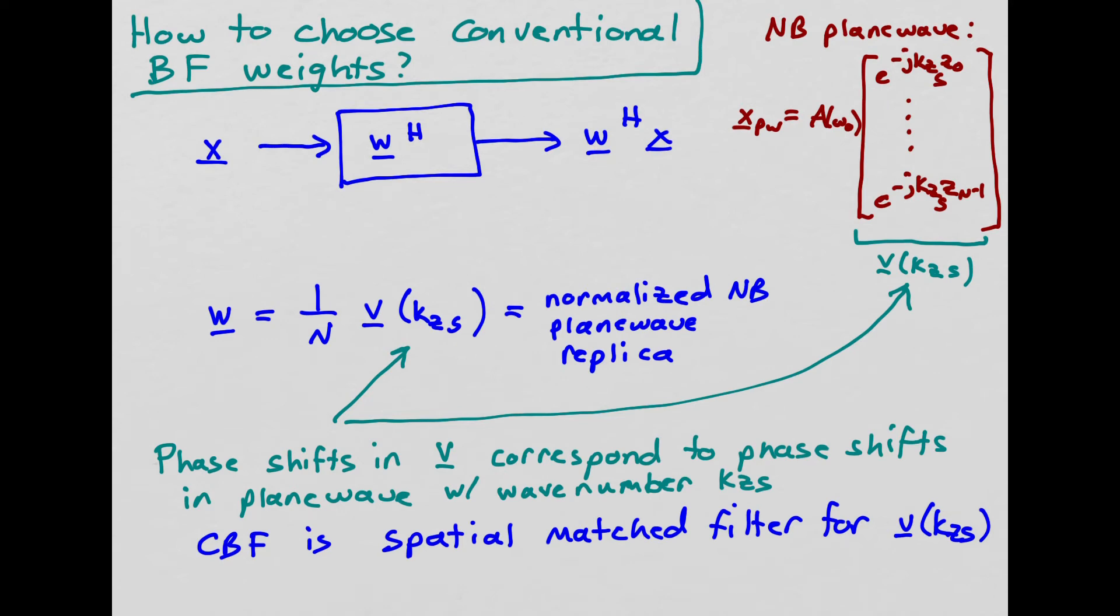And hopefully, it'll cause other plane waves coming from different directions, it won't have the right set of phase shifts, and so they won't add constructively. We can think of the conventional beamformer as a spatial matched filter. We have this template signal, which is the plane wave replica signal, V of KZs, and that's the template we're looking for. And so the conventional beamformer is basically the spatial matched filter looking for that template. We'll talk more in future classes about how this corresponds to a spatial matched filter.